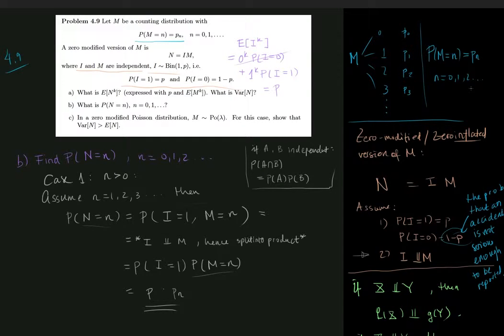Hi guys, and welcome to the last part of problem 4.9, where we assume that m is Poisson distributed with parameter lambda.